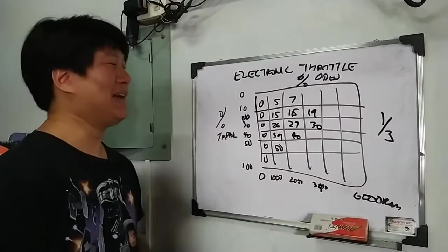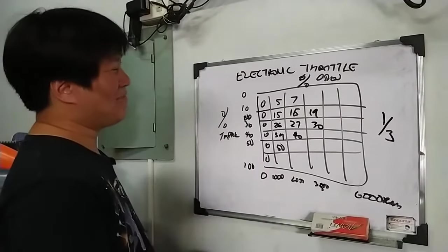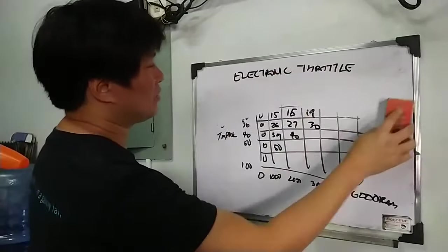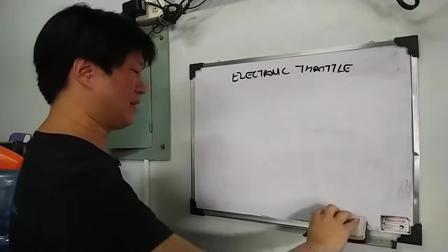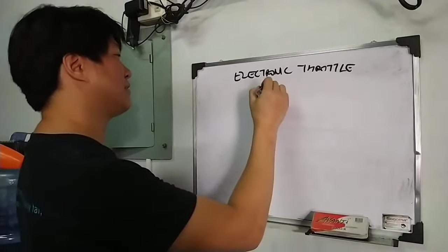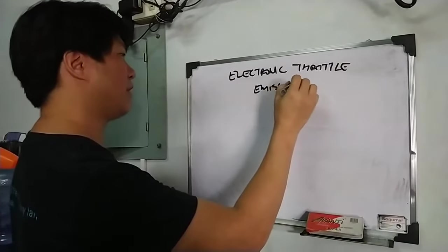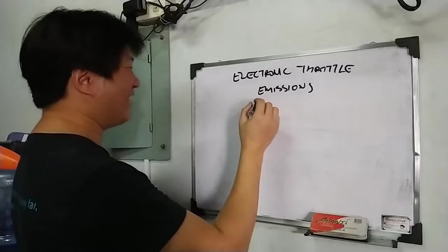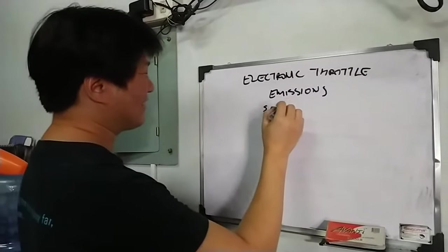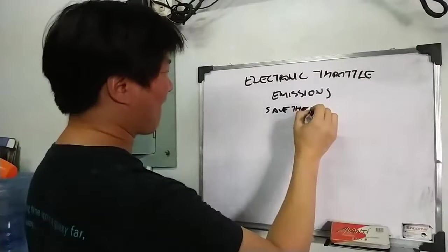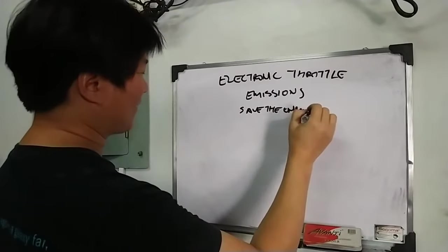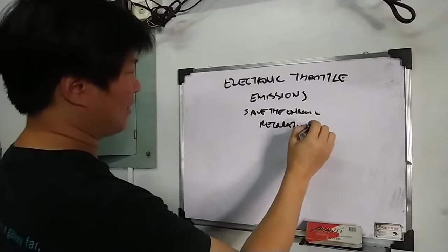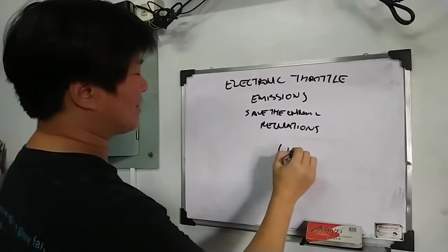Now, why is it like that? Ayos na dati, naka-cable. So, why go to an electronic throttle? The biggest reason has to do with emissions. Yes, save the environment and all of that nonsense. And regulations. Most of this stems from the U.S. government.